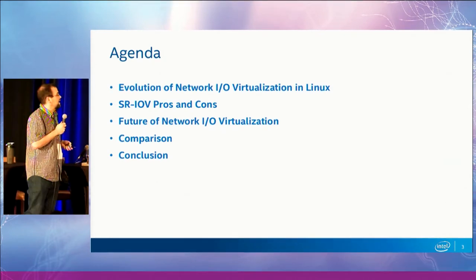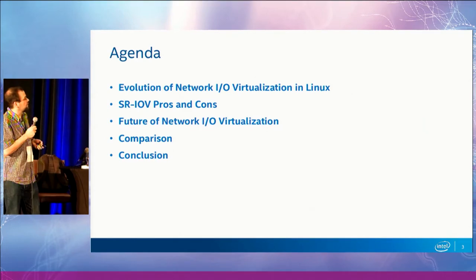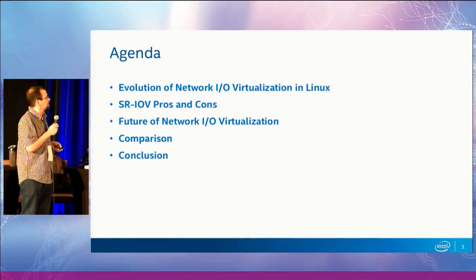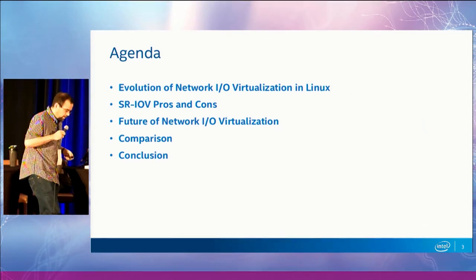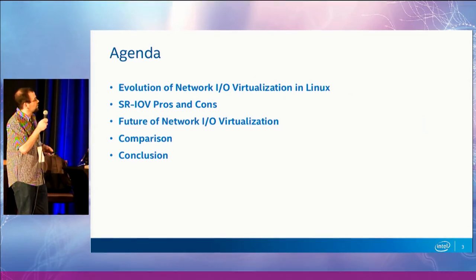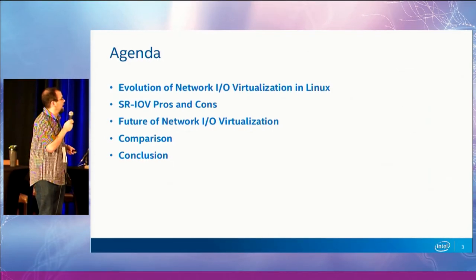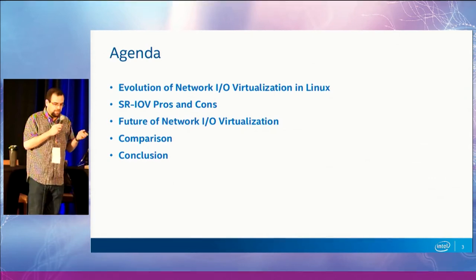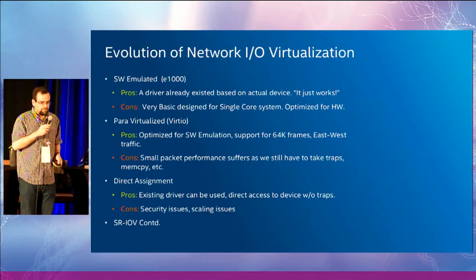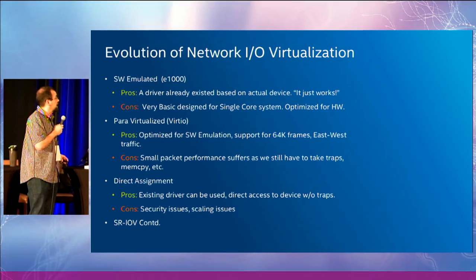So the goal of this presentation is to help remind us of some of the things we've done — the good, the bad — and hopefully help set some directions so we avoid the same mistakes we've made in the past. We'll go over a brief evolution of network I/O virtualization in Linux, some of the pros and cons of SR-IOV, the future of network I/O virtualization, a comparison of a few different items, and a brief conclusion.